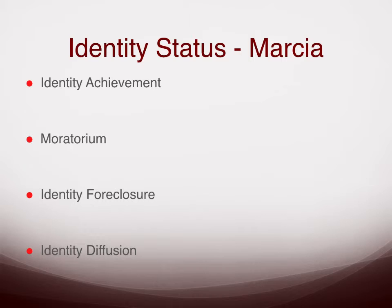The last type is identity diffusion. These individuals have not committed, like those in moratorium, but they are also not exploring. They are not actively trying to commit to a set of values or goals. They may have never explored any alternatives, or perhaps at some point tried to explore but found the task overwhelming or too threatening. They are just not exploring and not committed to anything — this is sort of the 35-year-old man living in his parents' basement kind of thing.